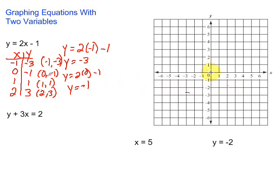Negative 1, negative 3. That means we go back negative 1, down to negative 3. There's our first point. Then 0, negative 1 puts us right here. Then 1, 1 is right there. And 2, 3 puts us right there.